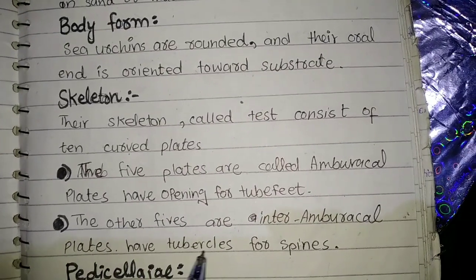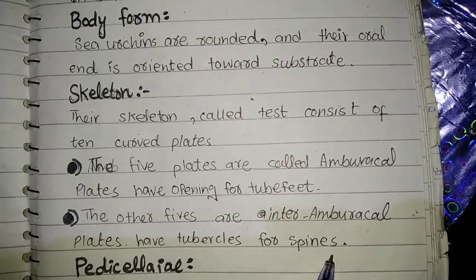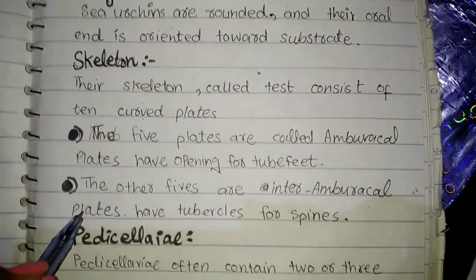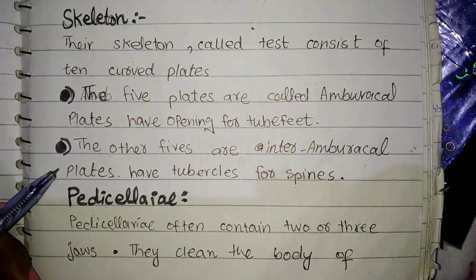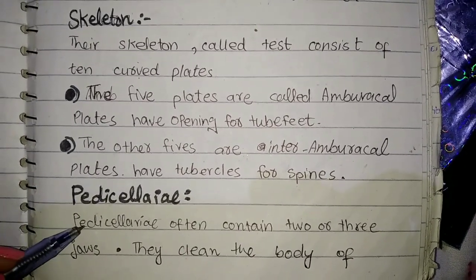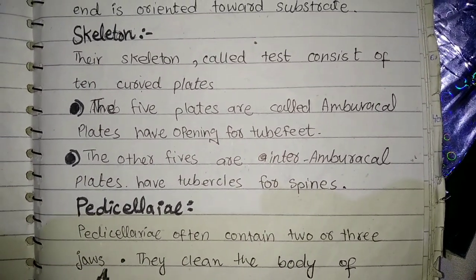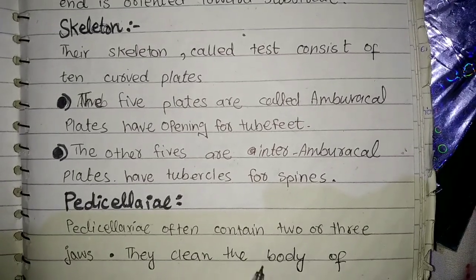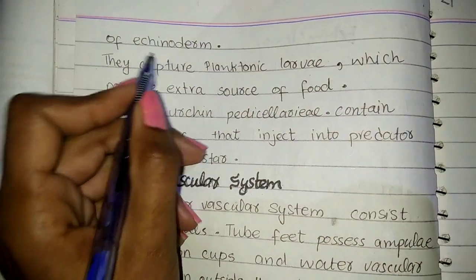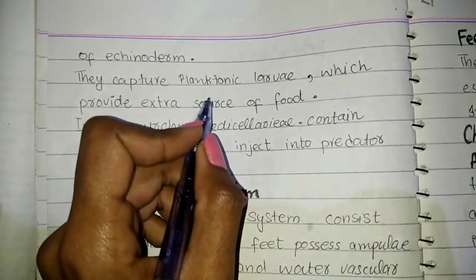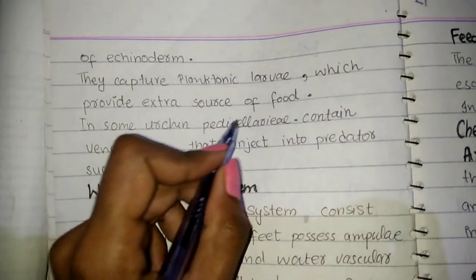The next heading is pedicellariae. Pedicellariae are pincer-like, scissor-like structures that often contain two or three jaws. They clean the body surface of echinoderms and capture planktonic larvae, which provides an extra source of food.